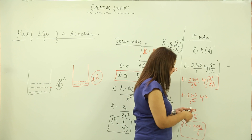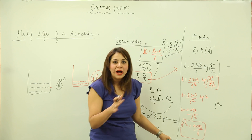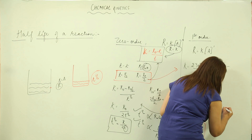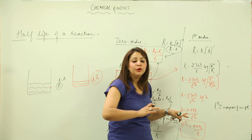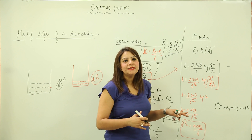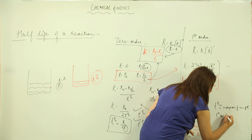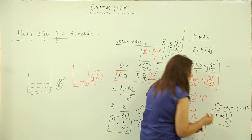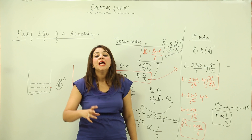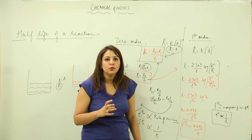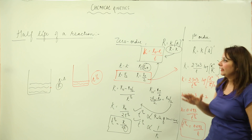For first order, since there is no R in the expression T-half = 0.693/K, the half-life is independent of the concentration of the reactant. Increasing or decreasing concentration does not affect T-half. However, T-half is inversely proportional to the rate constant K — that is the only factor on which first-order half-life depends.